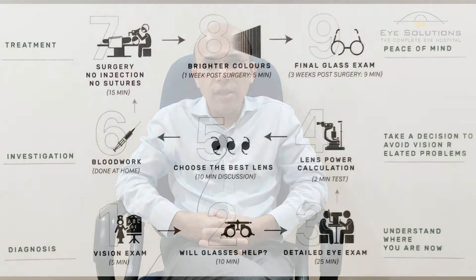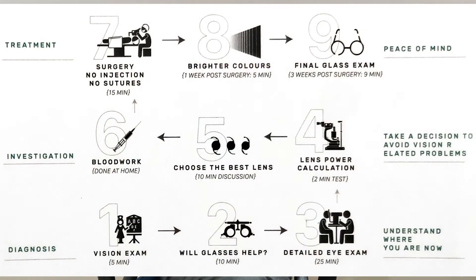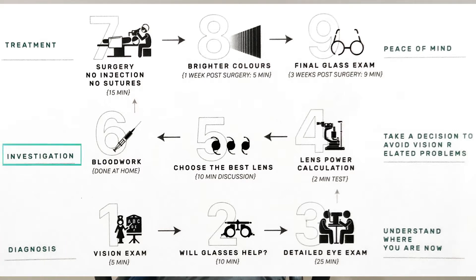Cataract surgery is one of the commonest surgeries that we perform at EyeSolutions. Over the years, we have devised a simple nine-step process to explain the different stages involved in planning and undergoing cataract surgery. This nine-step process ensures that the process is clear for you. These nine steps are divided into three stages: diagnosis, investigations, and treatment. Each stage has three steps to it.